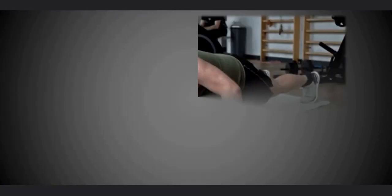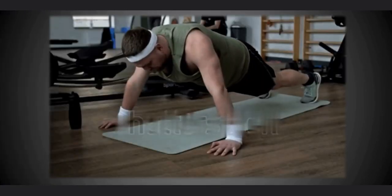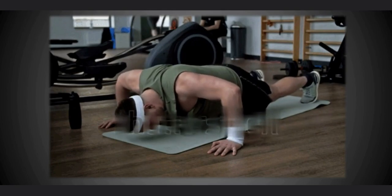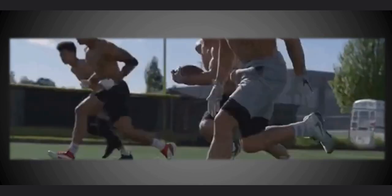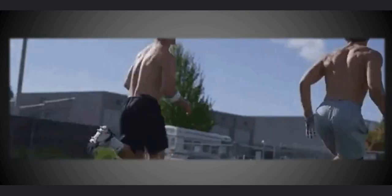To reach the lactate threshold, you need to exercise at a very high intensity until you experience muscle fatigue. For instance, sprinting as fast as you can for about 20-30 seconds at a time with 90 seconds of rest in between your sprints.